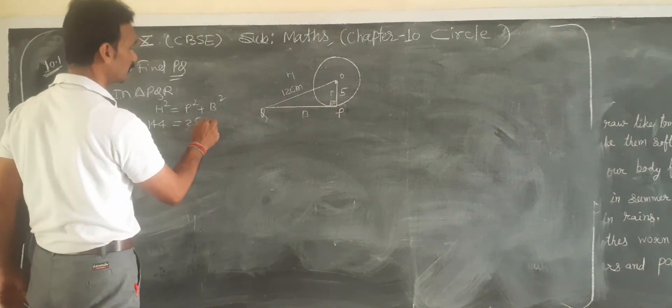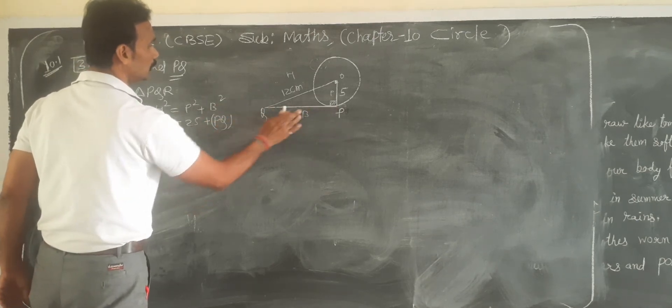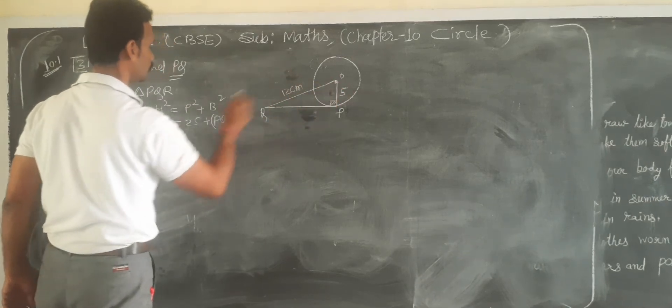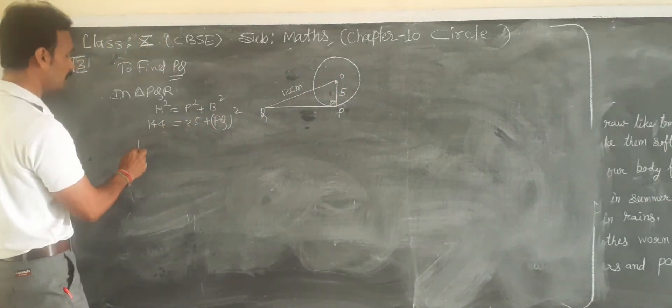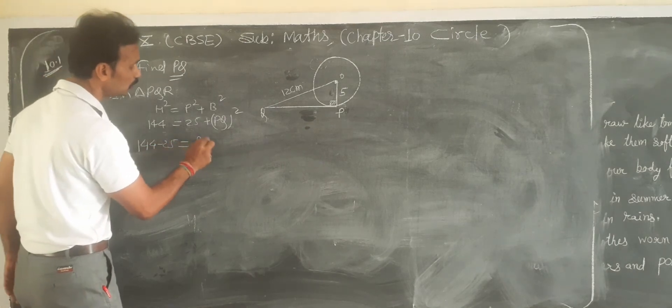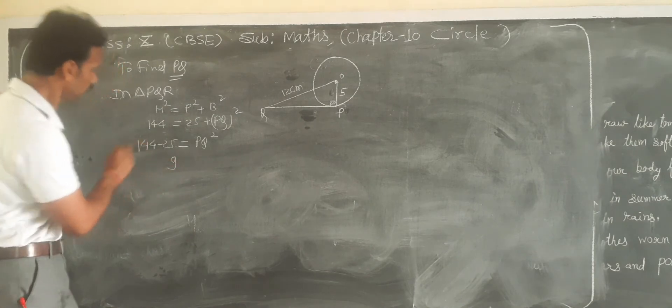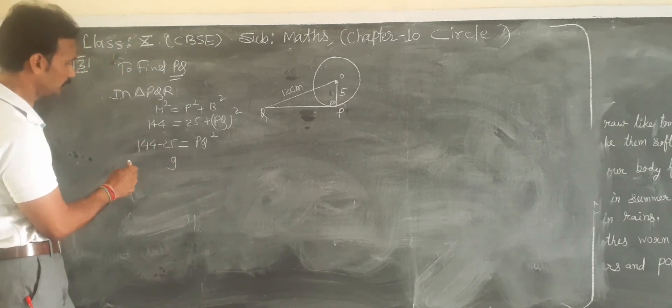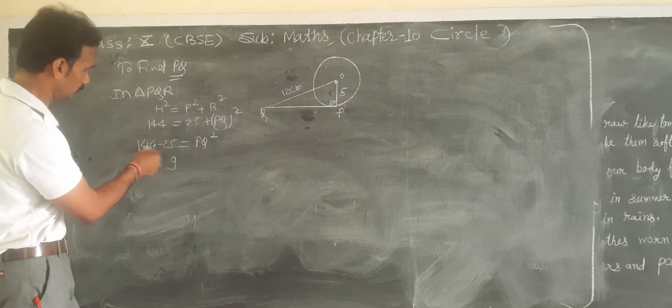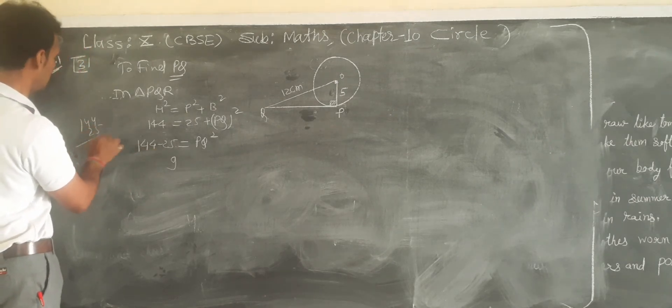Hypotenuse square means OQ, so 12 square equals 5 square plus PQ square. Then 144 minus 25 equals PQ square, so 119.